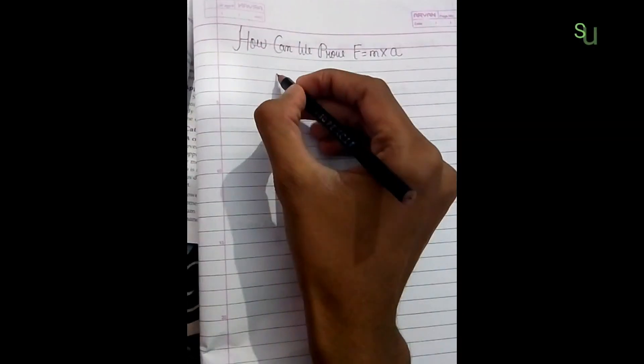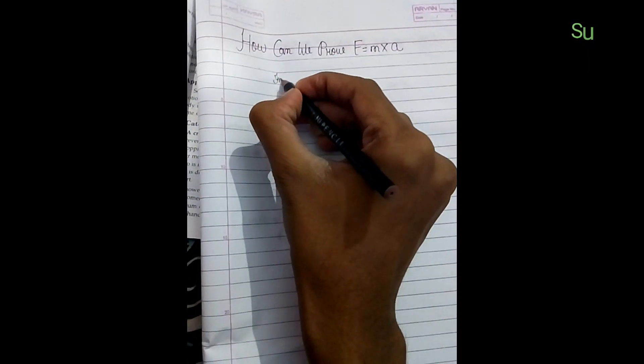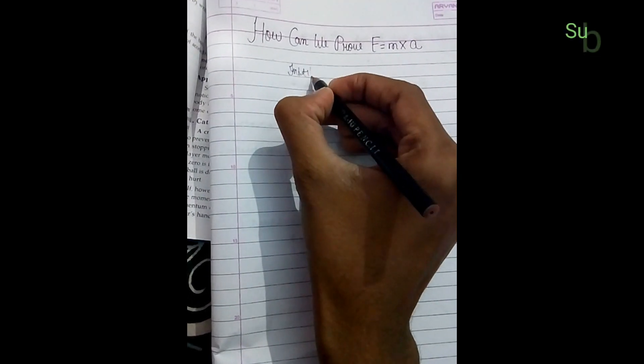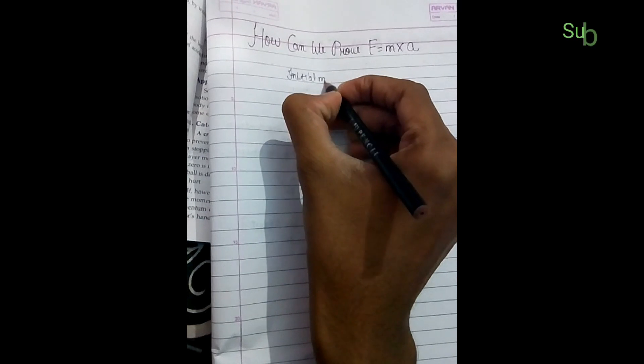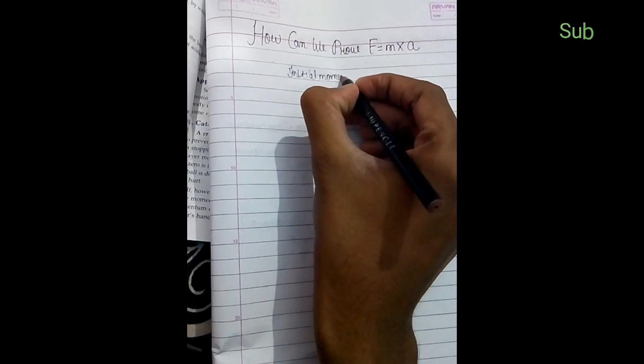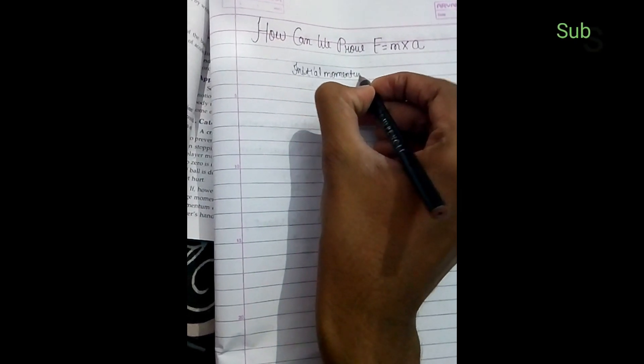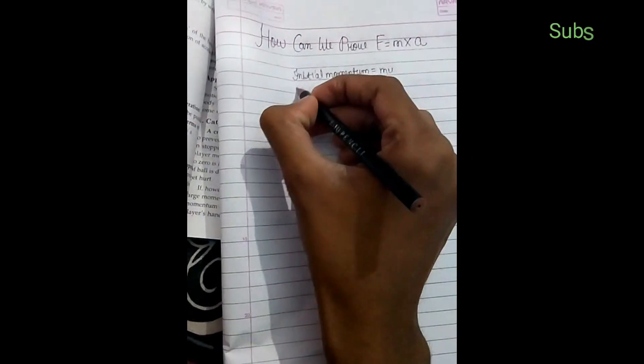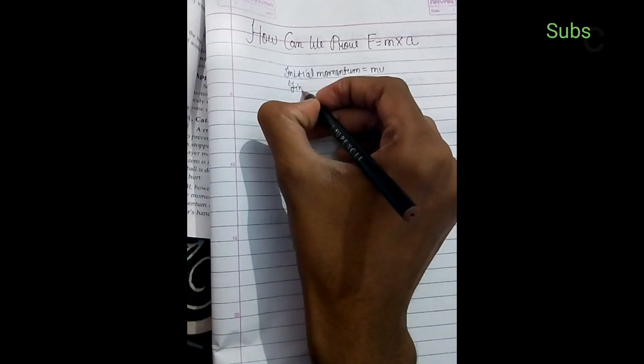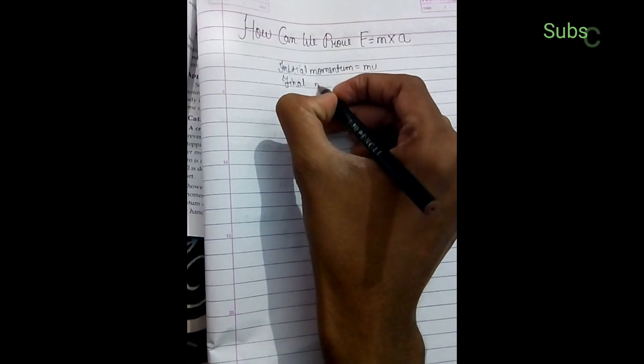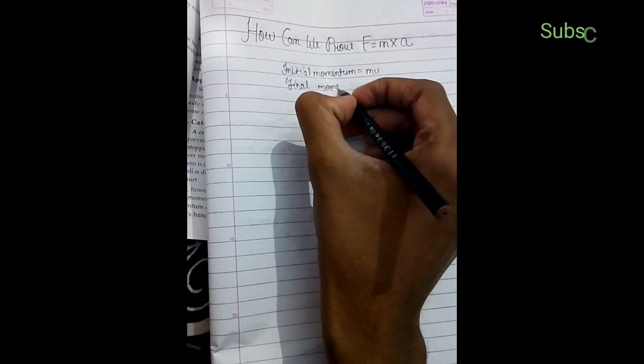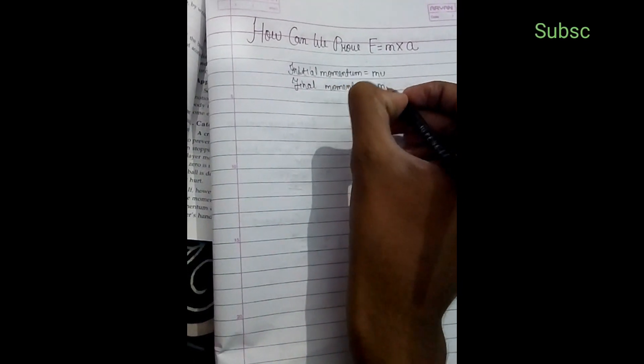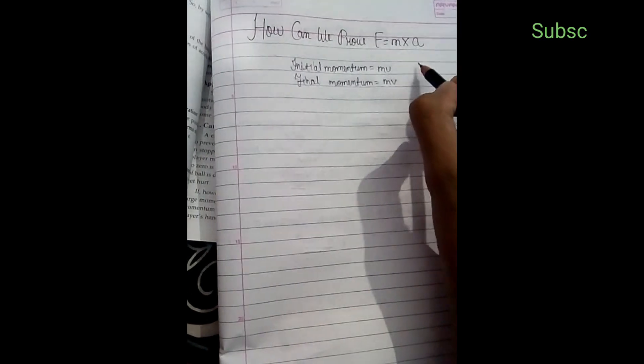Here we know that initial momentum equals mu and final momentum equals mv. So there we have initial momentum and final momentum values.